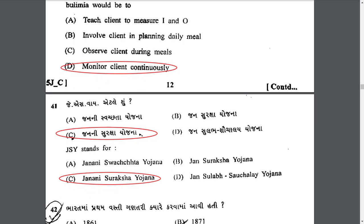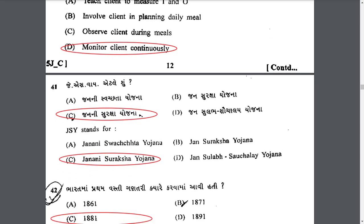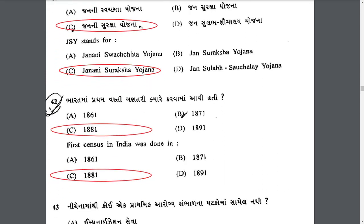JSY stands for Janani Suraksha Yojana. The first census in India was conducted in the year 1881.